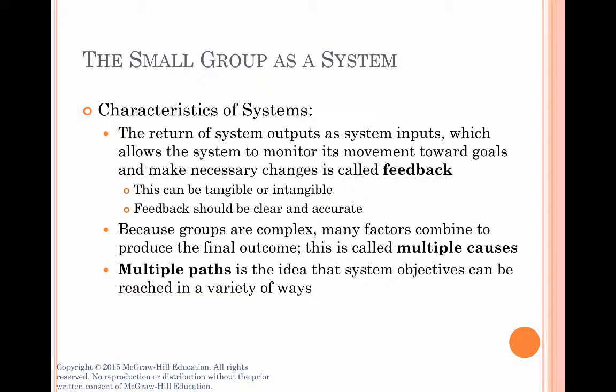Group work often involves returning system outputs back into the system as inputs. Outputs don't have to refer just to the final result — this input-throughput-output process actually happens continually during the lifetime of the group. For example, let's say you are assigned to do some individual research for your part of the task. You bring your results to a meeting and share them with the group — that's output, because it's the result of your work. But once you've shared it, that information now becomes input and is used by the group to continue the process until they arrive at the final product. This circular process of returning outputs back into the system as inputs is called feedback.